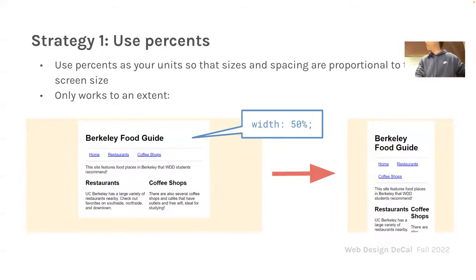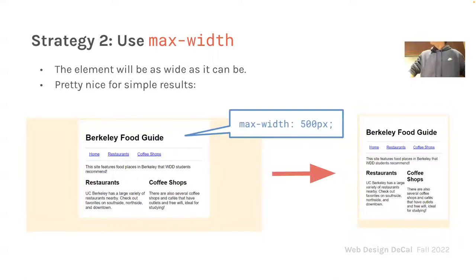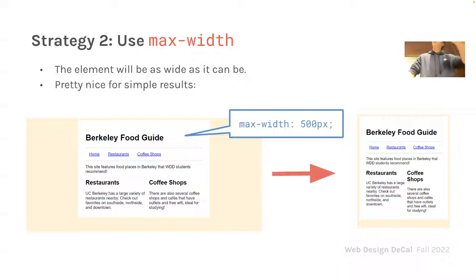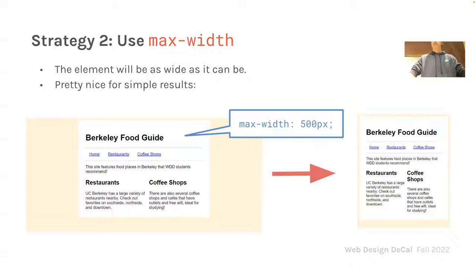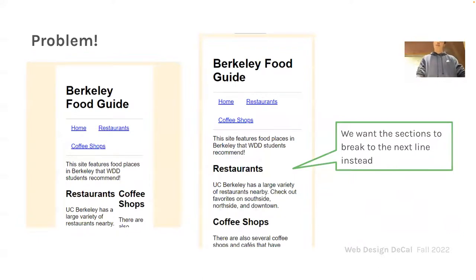Secondly, this CSS property is really nice if you want to set a maximum width for your website, and it can traverse multiple screen sizes. If you have a big monitor you can set this max-width property to be really large, and it will span the entire screen. Even if your screen is smaller than 500 pixels, this will basically mean that your box will span the entire screen.